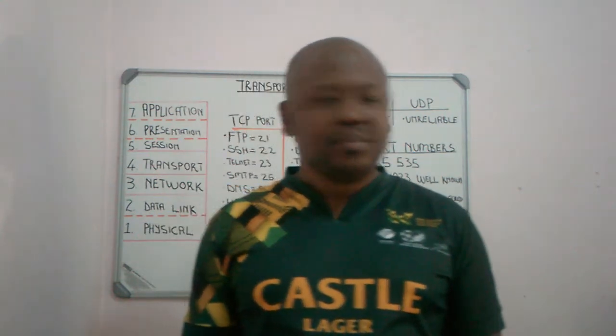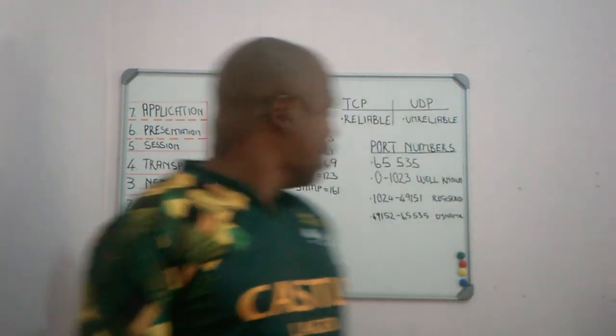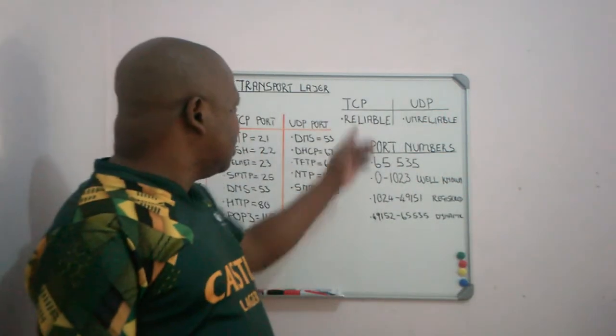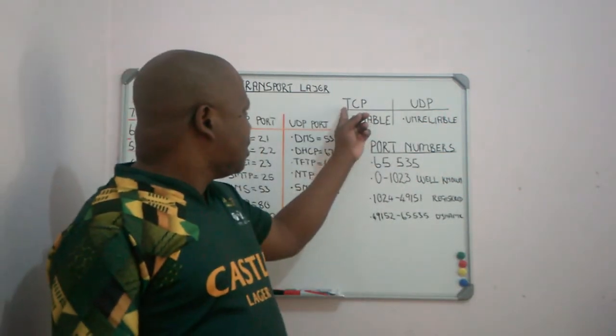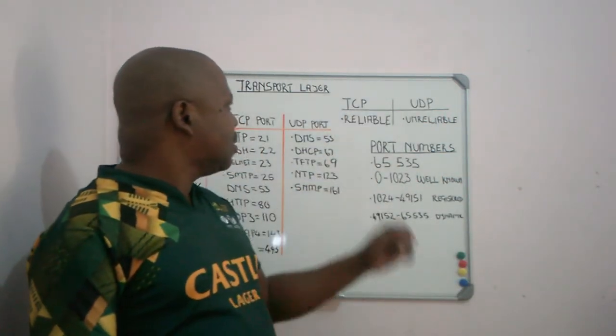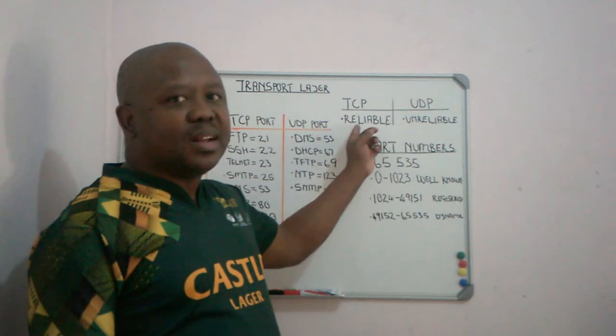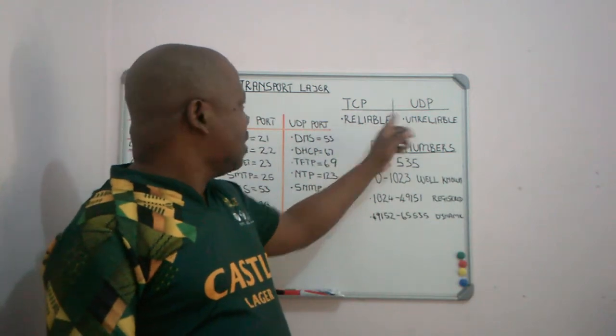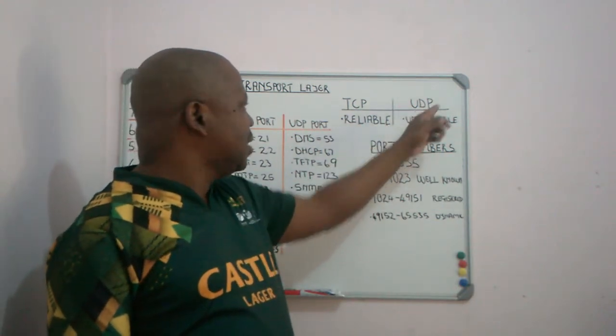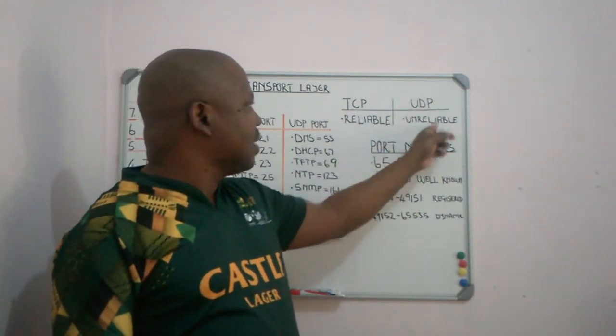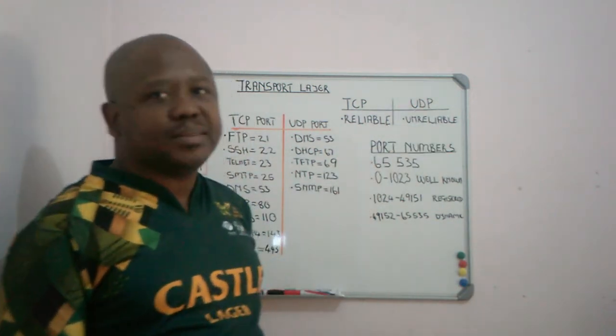Earlier I talked about the two protocols on the transport layer: TCP, which is the reliable one, and UDP, which is the unreliable one.